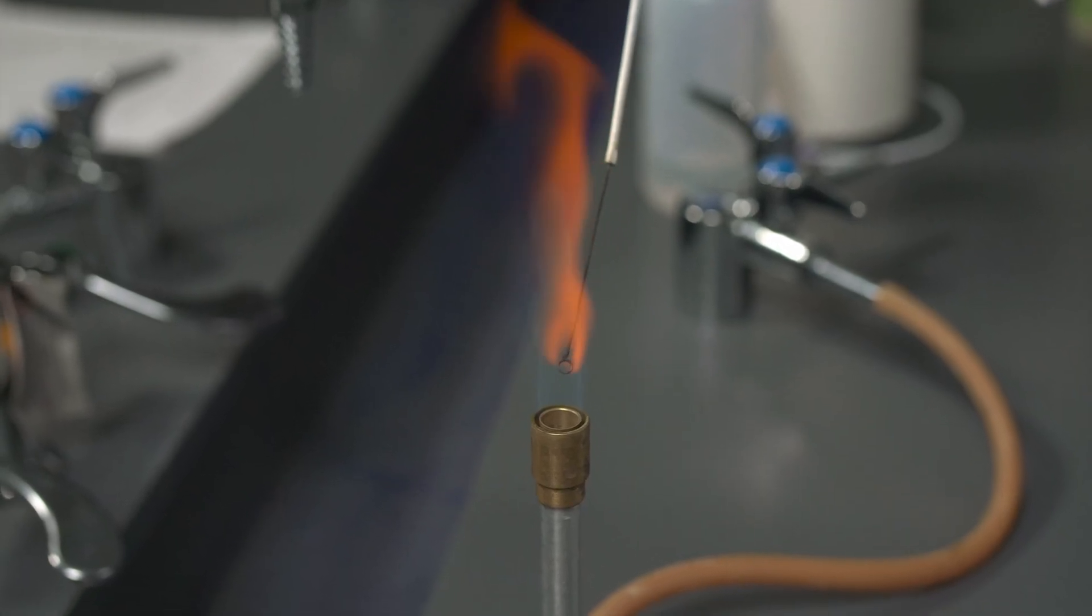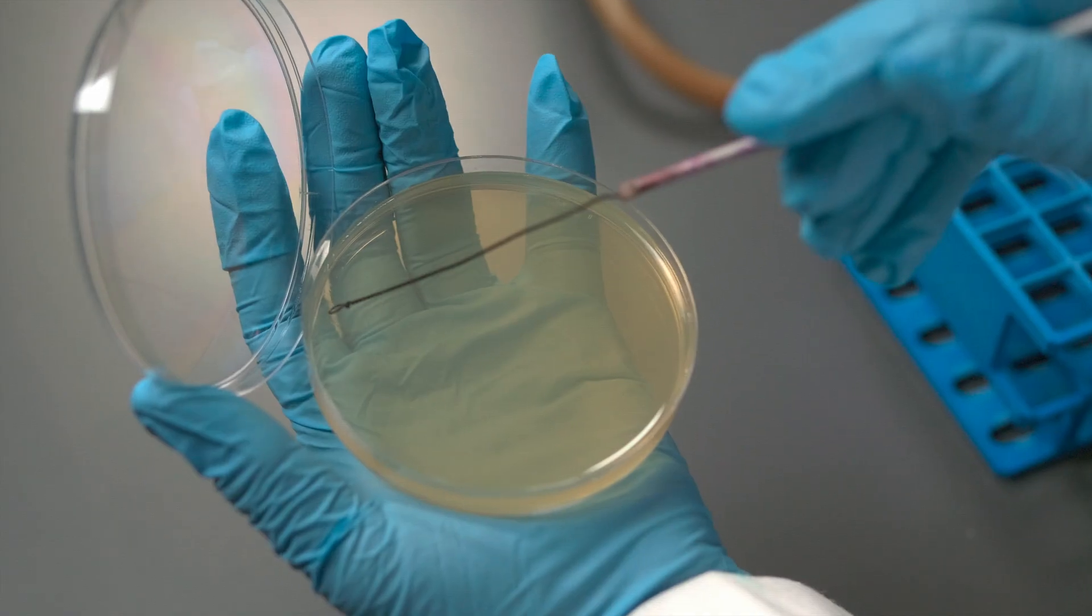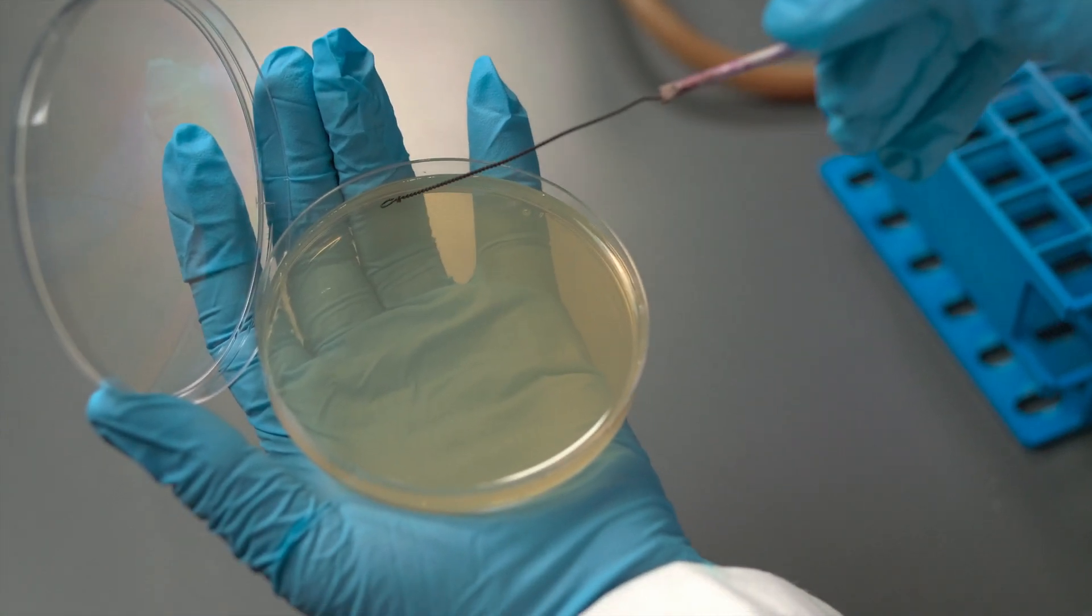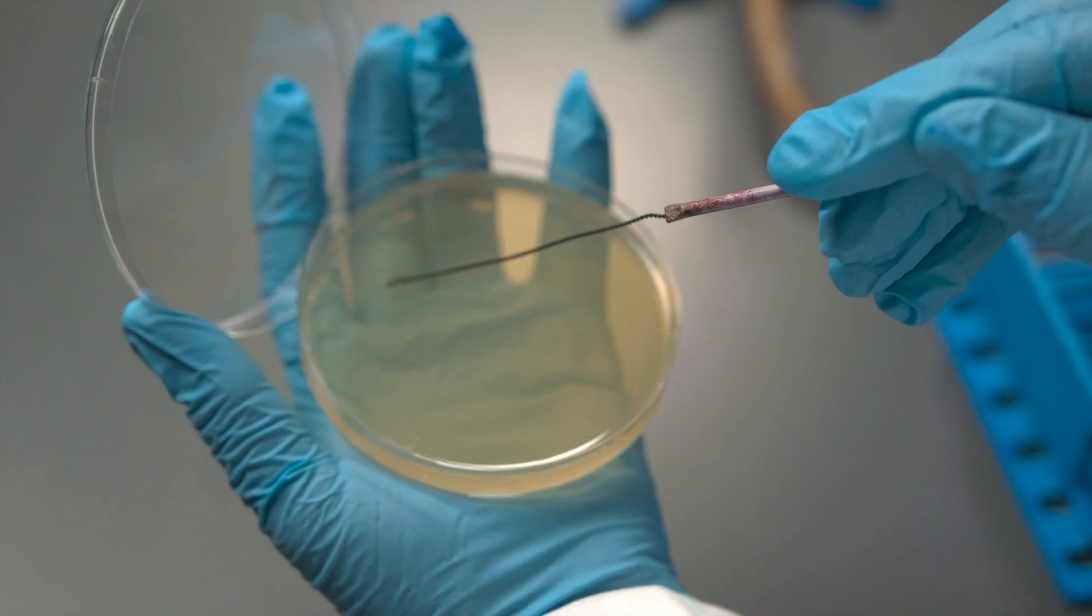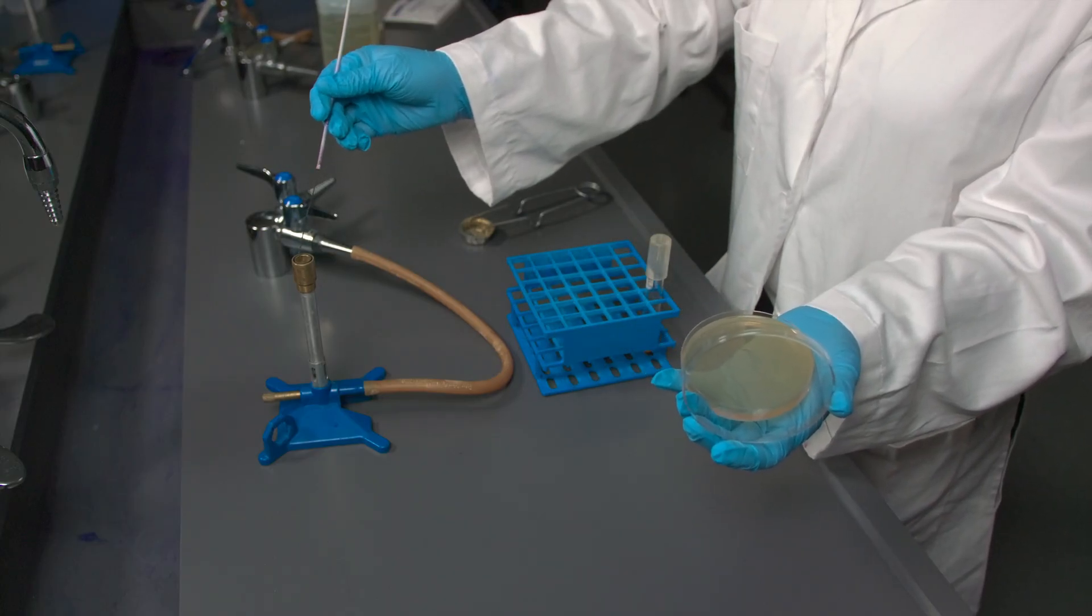Flame the loop. Now turn the plate 90 degrees and touch the loop to the edge of the streak lines once. Continue to streak the plate five times without touching the original streak lines. Once done, flame the loop again.